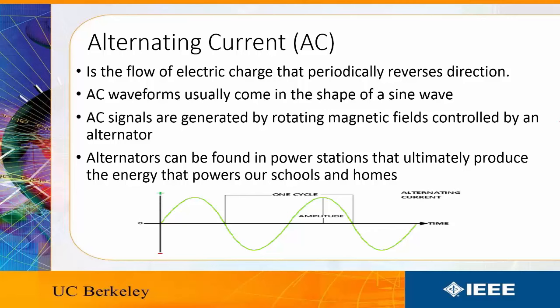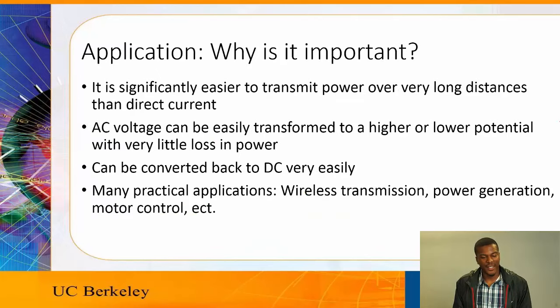This is the same energy that comes into our schools and our homes that power our outlets and our lights. The reason that AC current is so important is that it is significantly more easy to transmit the power over long distance than direct current. AC voltage can be easily transformed into higher or lower potentials with very little power loss, and then it can be converted back to DC very easily.